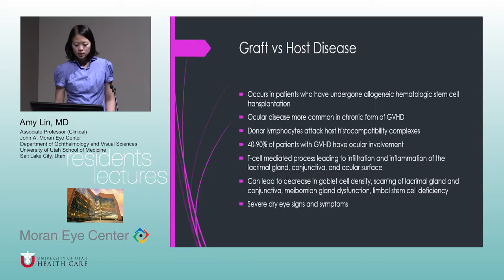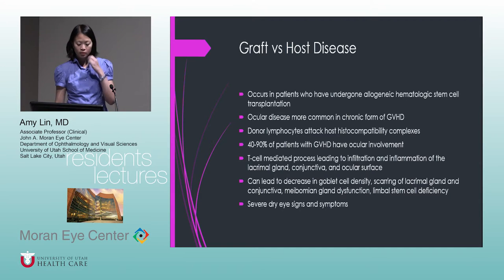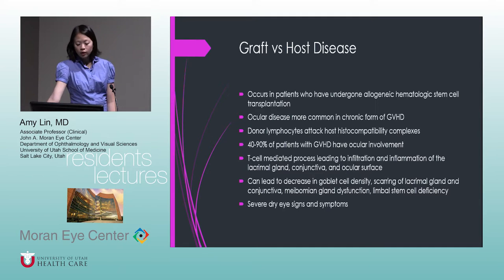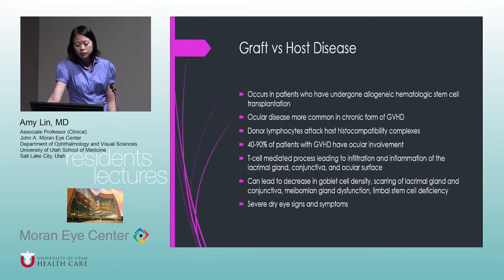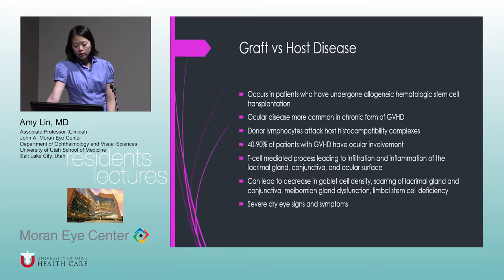Graft versus host disease occurs in patients who have undergone allogeneic hematologic stem cell transplant. Ocular disease is more common in the chronic form of GVHD. Donor lymphocytes attack host histocompatibility complexes. Forty to ninety percent of patients with GVHD will have ocular involvement. This is a T-cell mediated process leading to infiltration and inflammation of the lacrimal gland, conjunctiva, and ocular surface, causing very severe dry eye.